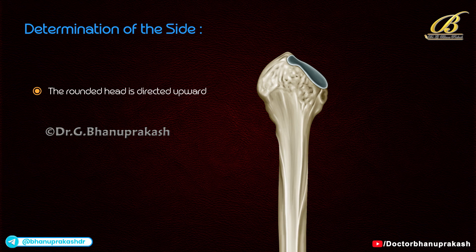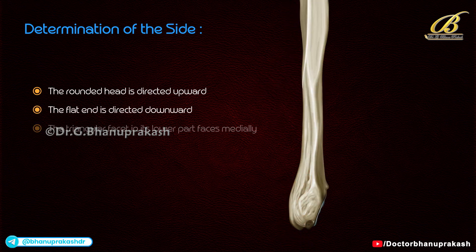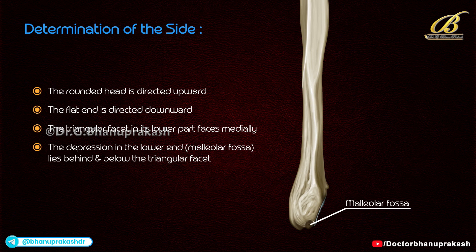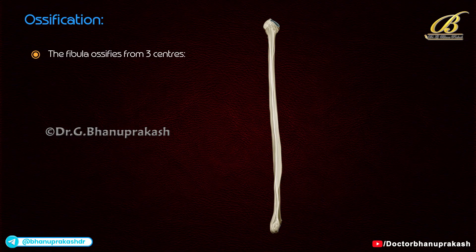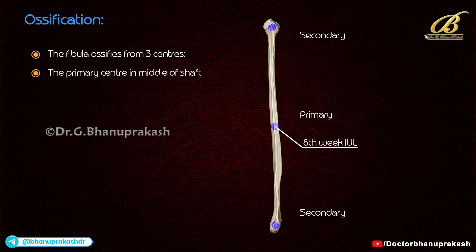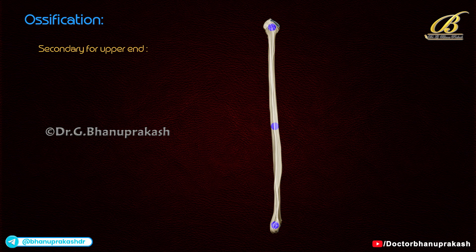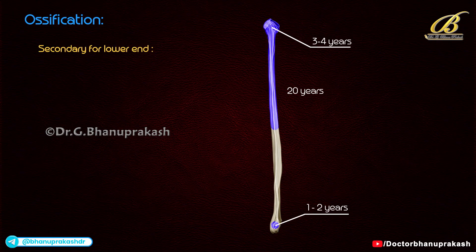The lateral surface of the lateral malleolus is triangular and subcutaneous. For determination of side: the rounded head is directed upwards, the flat end is directed downwards, the triangular facet in the lower part faces medially, and the depression in the lower end lies behind and below the triangular facet. Ossification: the fibula ossifies from three centers — one primary and two secondary. The primary center appears in the middle of the shaft in the eighth week of intrauterine life. The secondary center for the upper end appears at around three to four years and fuses with the shaft by 20 years; the lower end appears at around one to two years and fuses with the shaft by 18 years.